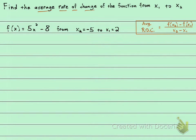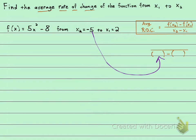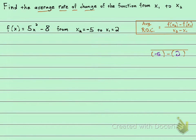We do know x2 and x1, they were given to us. When we plug in x2 minus x1: x2 is negative 5 and x1 is 2. We still need to find f of x2 minus f of x1 — I don't know those two numbers yet, so I'll need to plug them in.